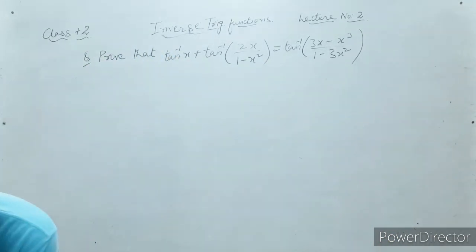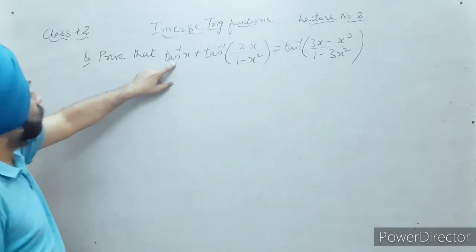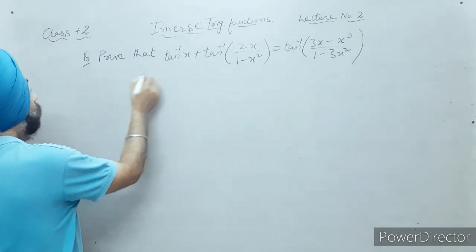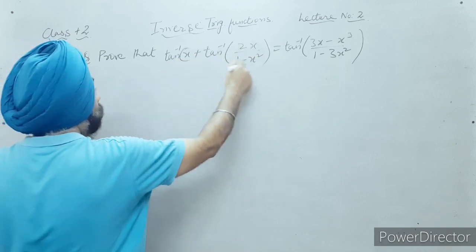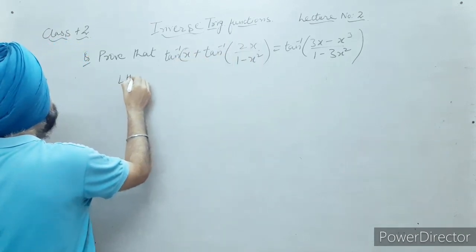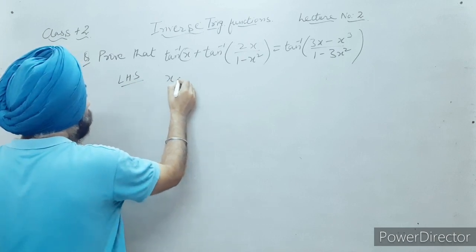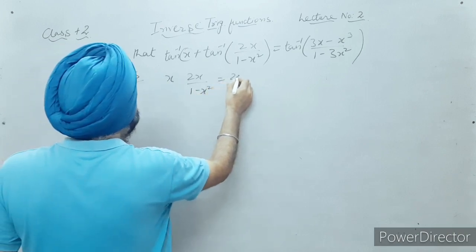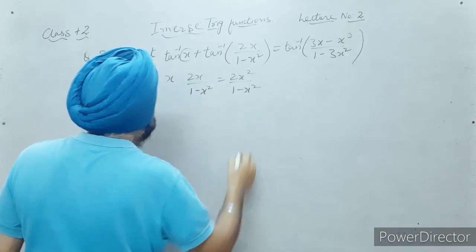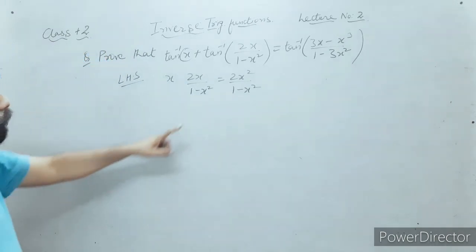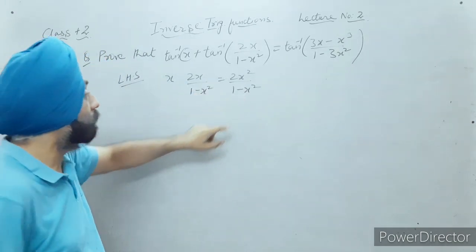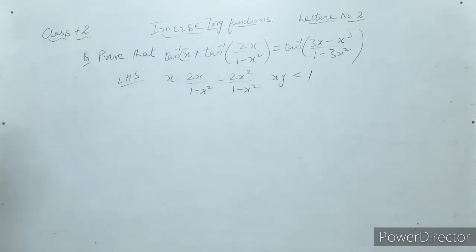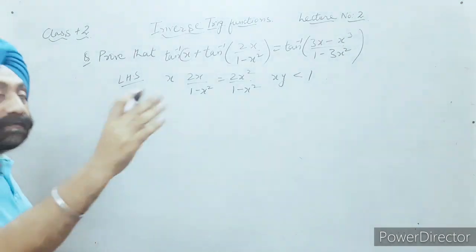Taking the left hand side: tan inverse x plus tan inverse [2x upon (1 minus x²)]. Here x is my first value and 2x upon (1 minus x²) is my y. When I multiply x and y, I get 2x² upon (1 minus x²). This product is less than one, so I apply the first formula: tan inverse x plus tan inverse y equals tan inverse [(x plus y) upon (1 minus xy)].